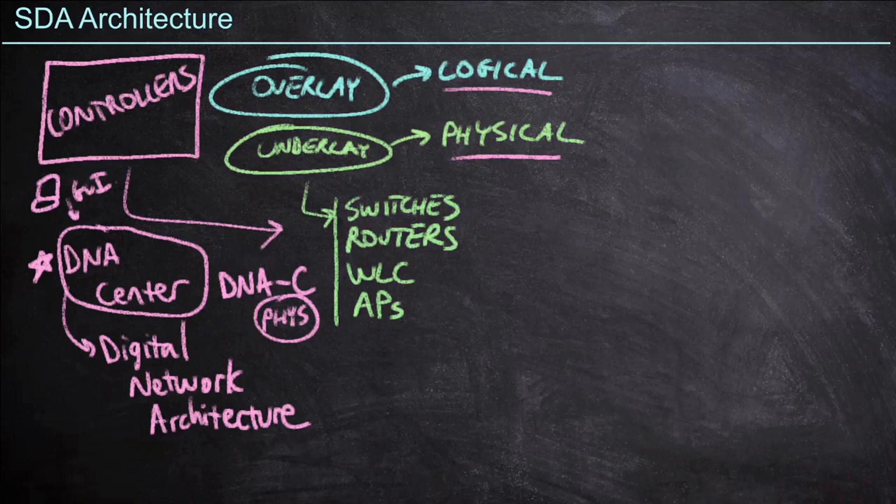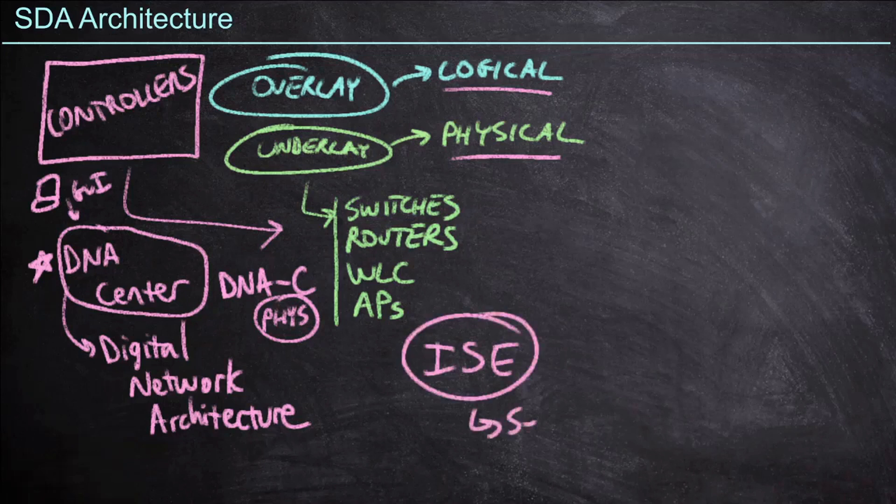Now there is one other controller we need to be aware of, and we mentioned it in the last video. It's the Identity Services Engine, or ISE. ISE is a security platform that's going to focus on identity. Remember, we want to be able to track where individual users are, not based on their IP addresses, but based on their devices or based on their location. So ISE is going to handle the security elements and help us lock down our software-defined access network.